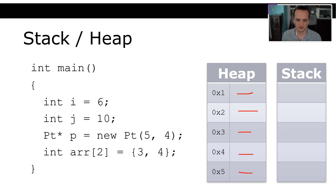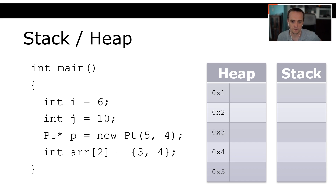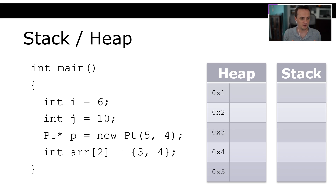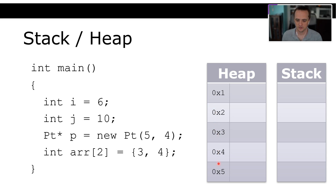Running through this program: `int i` gets allocated on the stack since we haven't used `new`, and `j` gets allocated on the stack as well — holding value 10. Then the big difference: instead of putting the point's values directly on the stack, the pointer itself — which is an address — goes on the stack, and the data goes on the heap at that address.